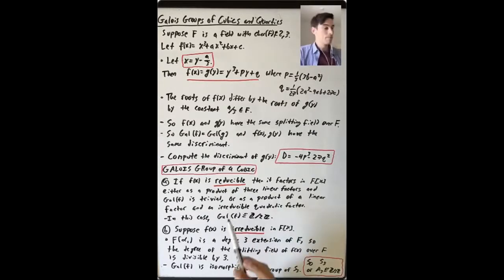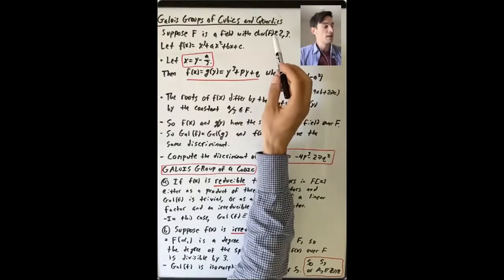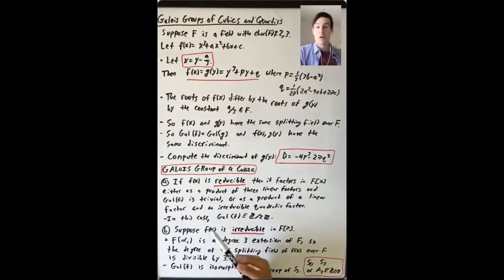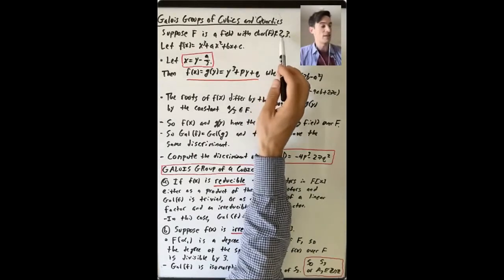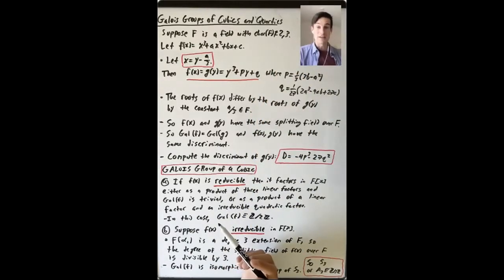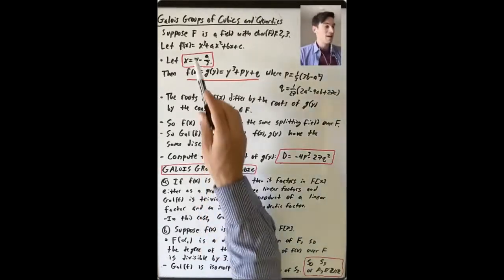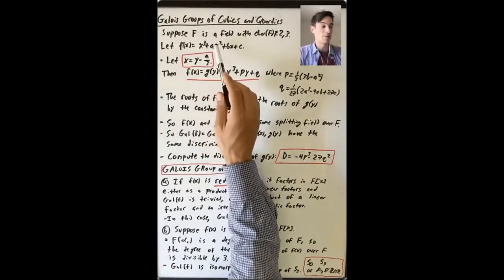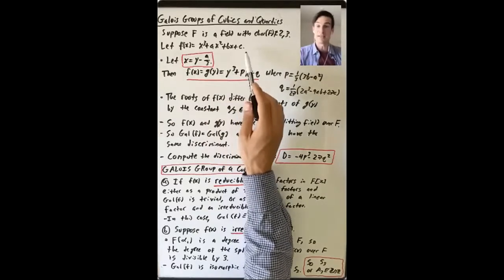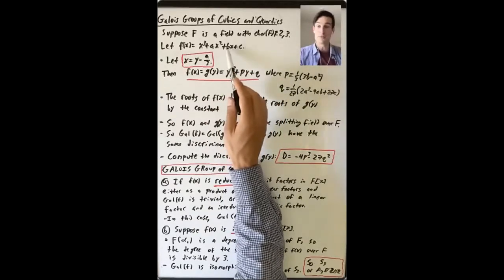So what's our setup? Let's suppose that F is a field with the characteristic of F not being 2 or 3. Why do we want the characteristic not to be 2? As we talked about last time, the discussion of the discriminant and Aₙ as a subgroup of Sₙ is a little bit different in characteristic 2 in a way that I would like to ignore for now. So let's suppose the characteristic of F is not 2.